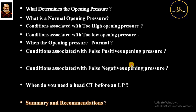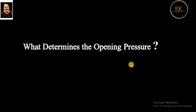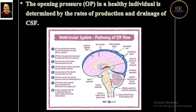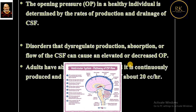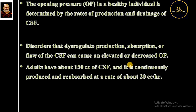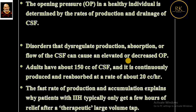What determines the opening pressure? Opening pressure in a healthy individual is determined by rate of production and drainage of CSF. Disorders that dysregulate the production, absorption, or flow of CSF can cause an elevated or decreased opening pressure. Adults have 150 cc of CSF, and it is continuously produced and reabsorbed at a rate of 20 cc per hour. The faster rate of production and accumulation explains why a patient of IIH — idiopathic intracranial hypertension — typically only gets a few hours of relief after a therapeutic large volume tap.